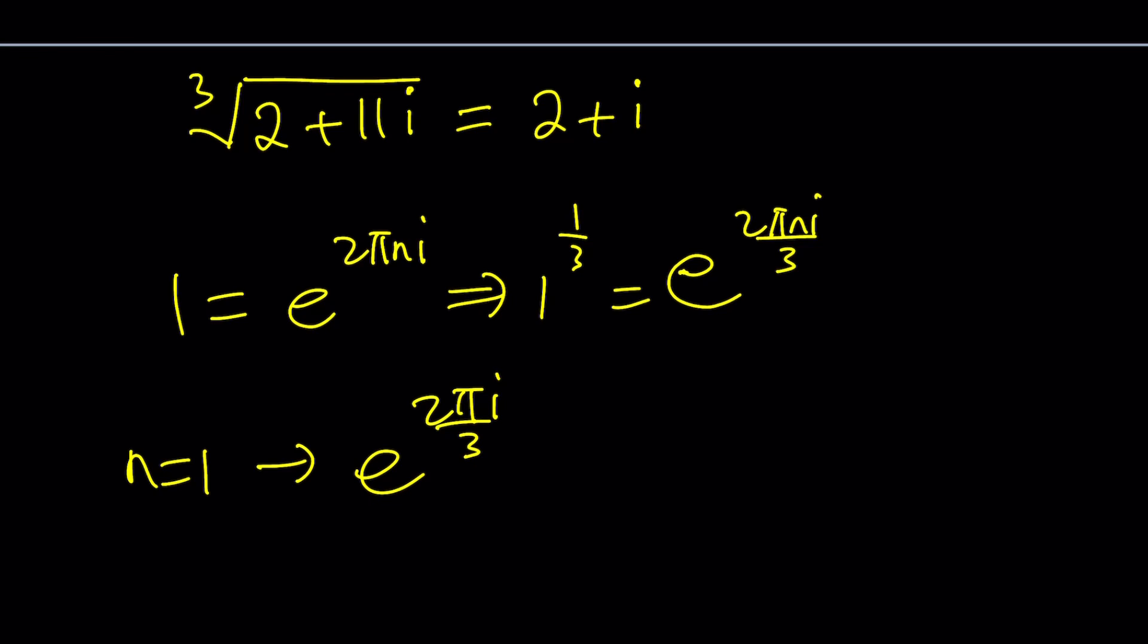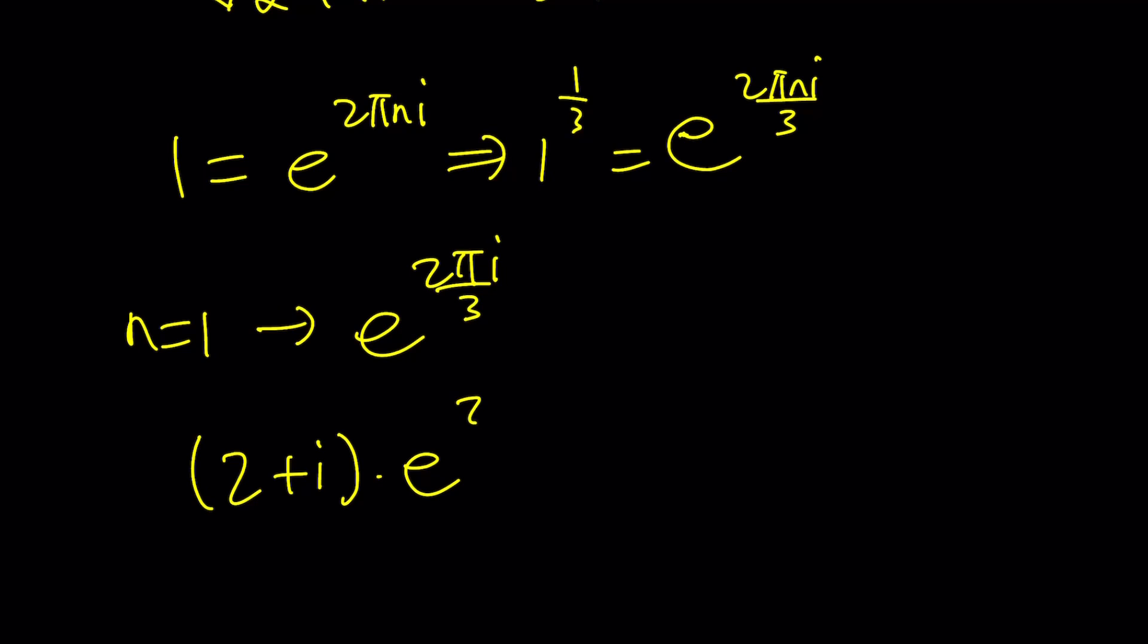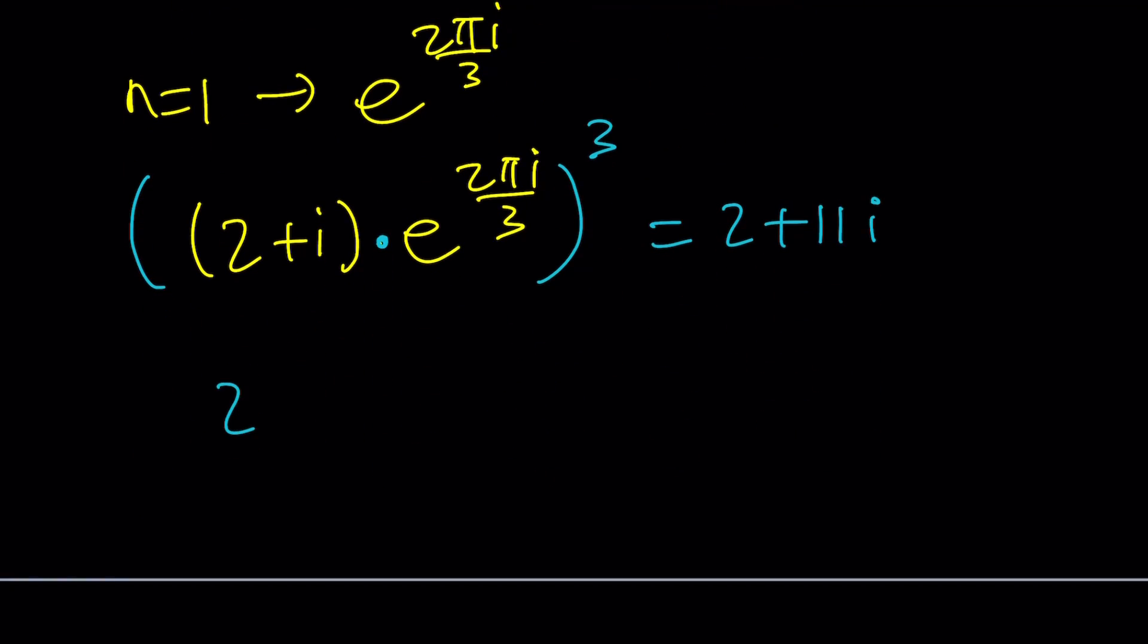Therefore, when I multiply my number, the cube root, by one of the cube roots of 1, and then cube the result, it's supposed to give me the cube of 2 plus i, which is 2 plus 11i, multiplied by e to the power 2 pi i, which is 1. So it's going to give me the same number. So in other words, this is one of the cube roots, and you can find the other cube root by basically multiplying it by e to the power 4 pi i over 3. That's just going to be another cube root and it's still going to give you the exact same answer.